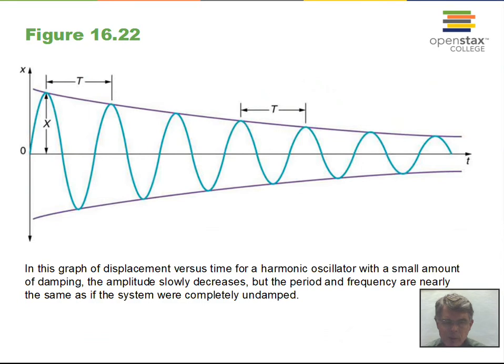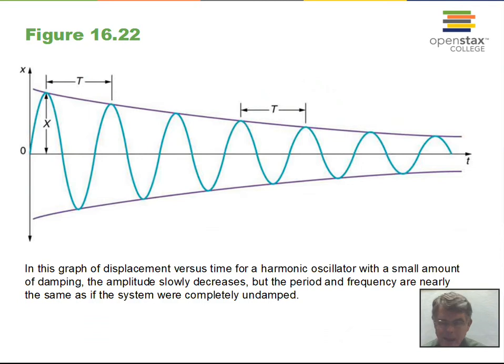On a frictionless horizontal table, if you release the mass it goes back and forth forever, returning to the full amplitude every cycle. At the midpoint, kinetic energy ½mv² equals the potential energy ½kx² from the endpoints of the motion. Energy moves back and forth between kinetic and potential forms.